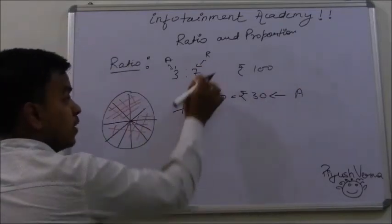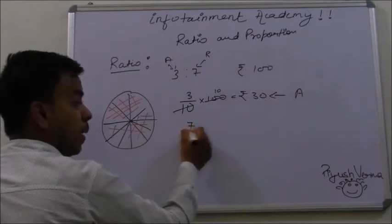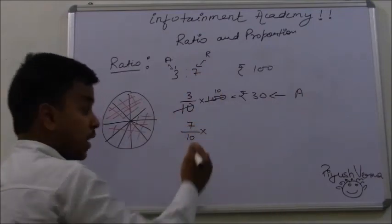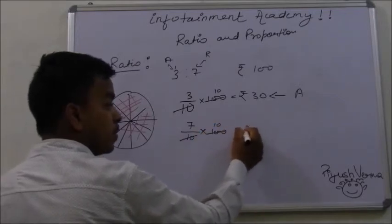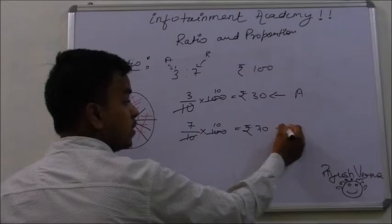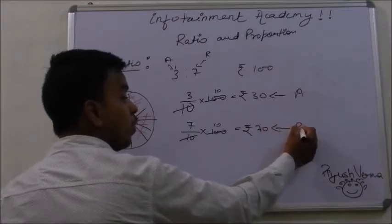In order to find the share of B, write the B part upon total part, and the amount to be distributed is rupees 100. Just simplify it. It is rupees 70. This is the part of B.